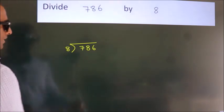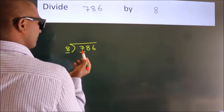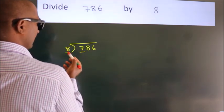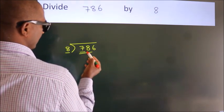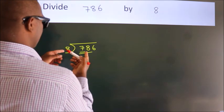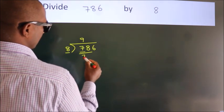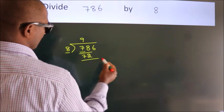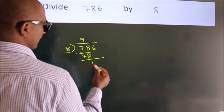Next, here we have 7. Here 8. 7 is smaller than 8, so we should take two numbers: 78. A number close to 78 in the 8 table is 8 nines, 72. Now we subtract. We get 6.